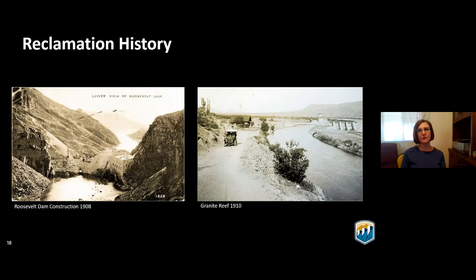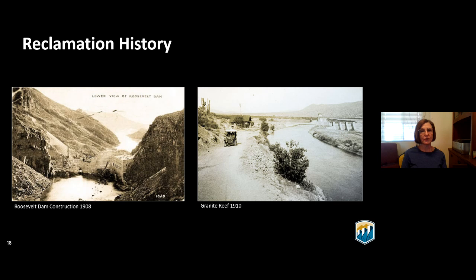In 1903, Reclamation authorized its first five projects, among them the Salt River Project in Arizona. Roosevelt Dam was one of the Salt River Project facilities. It rose to the top of the Reclamation project list because landowners had formed the Salt River Valley Water Users Association with a cooperative agreement on how they would donate land, share water, and pay back project costs. In 1905 they started construction on Roosevelt Dam, and about a year in, the cost of oil skyrocketed, blowing up the project budget. They decided to install their own power at the facility. By 1906 they were generating all their project power, and by 1909 they were delivering power to Phoenix, making Roosevelt Dam Reclamation's first multipurpose facility.